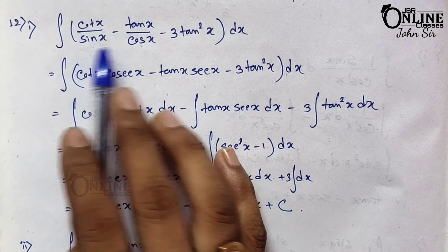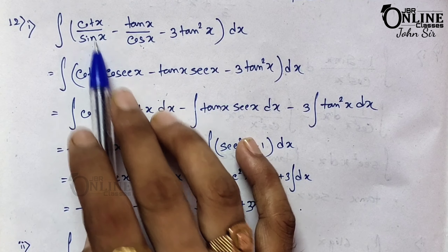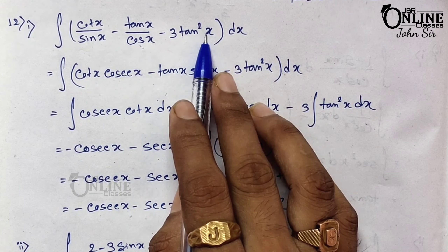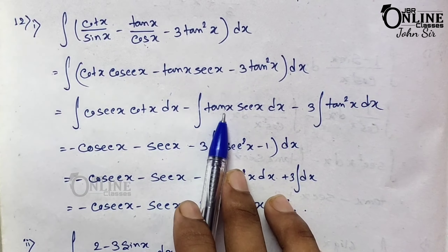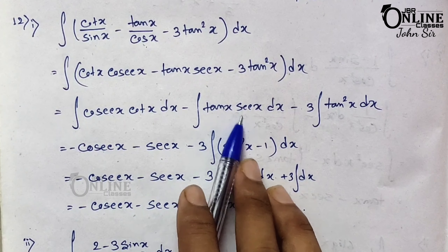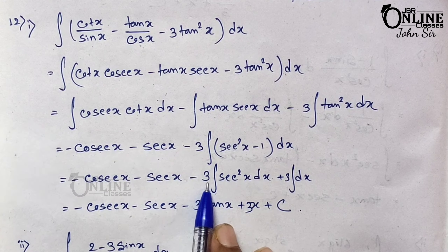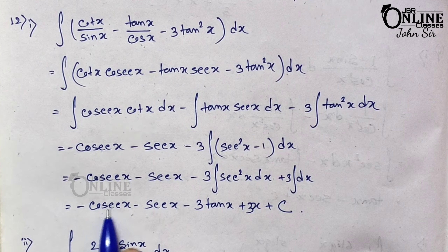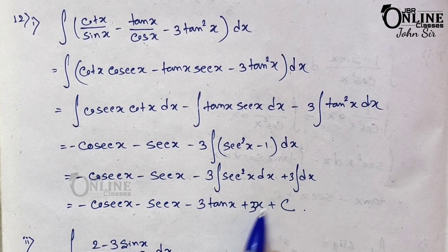Sum 12.1: integration of (cot x / sin x) − (tan x / cosec x) − 3tan²x. Here cot/sin: 1/sin means cosec, so cot x·cosec x. And tan x / cosec x: 1/cosec = sin, and tan·sin/cos = tan·sec... wait — 1/cosec means sin, so tan x · sec x. Separating: ∫cot x·cosec x dx = −cosec x; ∫tan x·sec x dx = sec x; and for −3tan²x, use tan²x = sec²x − 1. So −3[tan x − x] = −3tan x + 3x. Final answer: −cosec x + sec x − 3tan x + 3x + c.